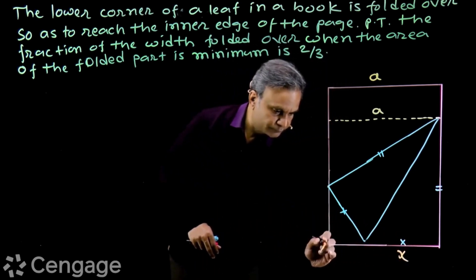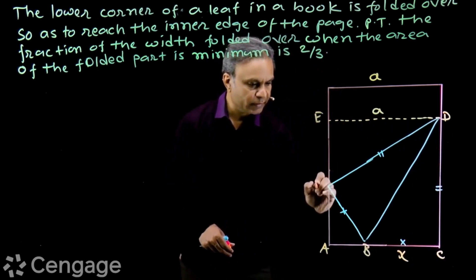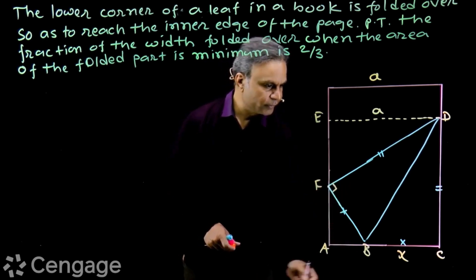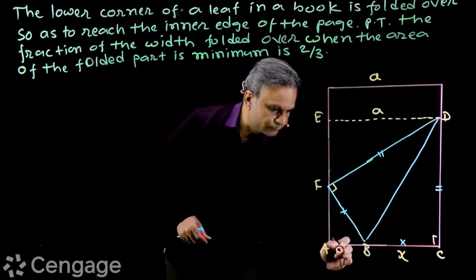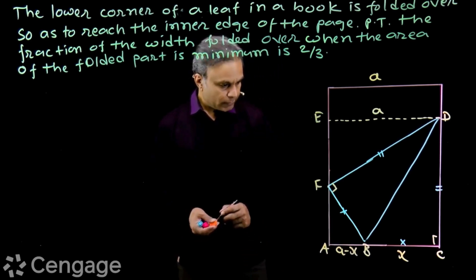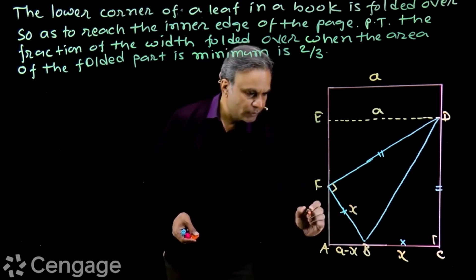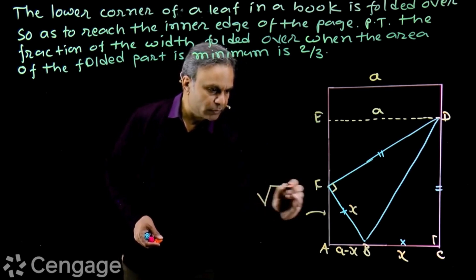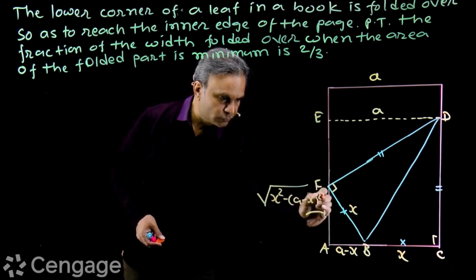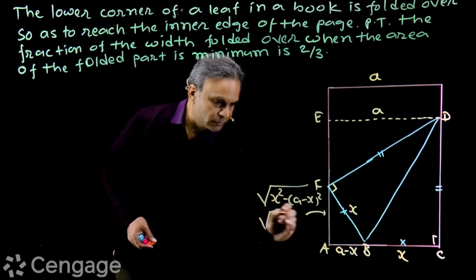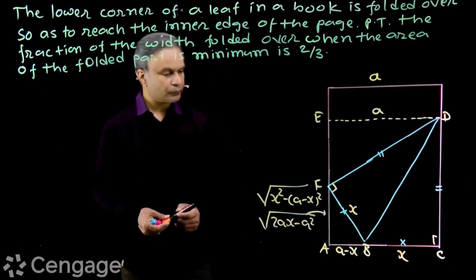We introduce a variable: suppose the points are A, B, C, D, E, and F. This angle is 90 degrees. Suppose BC is x, then AB will be a minus x. Then FB will also be x, and AF will be the square root of x squared minus (a minus x) whole squared, which simplifies to the square root of 2ax minus a squared.